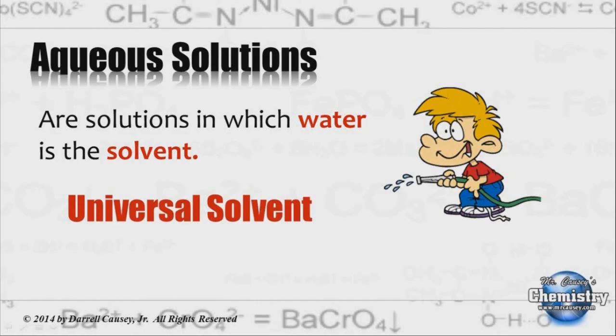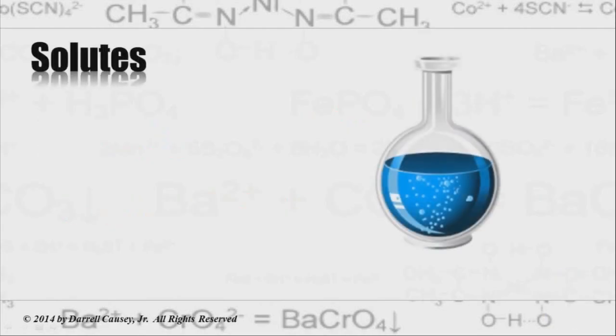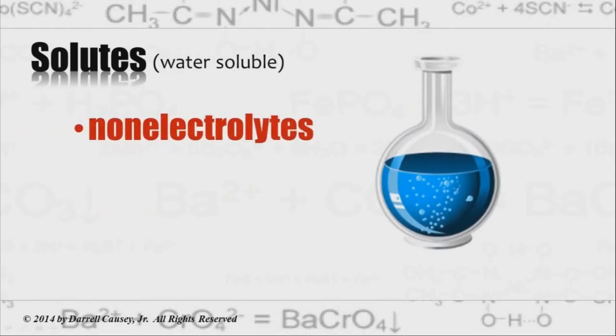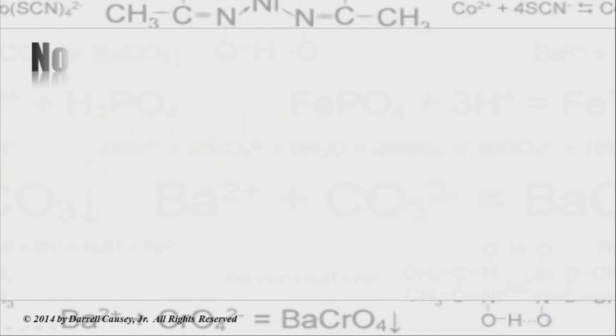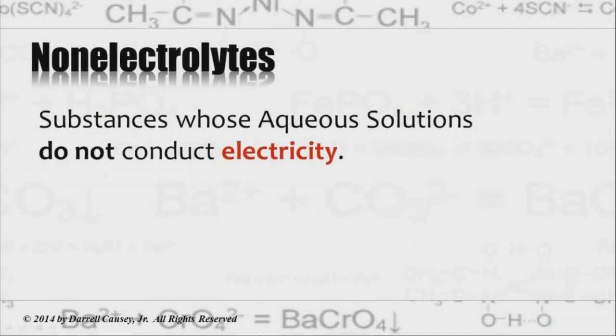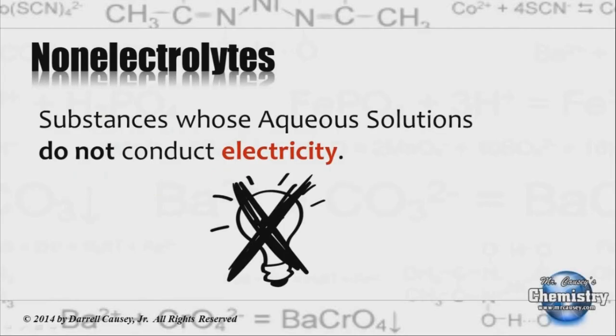Solutes that are soluble in water fall into two categories: non-electrolytes and electrolytes. Non-electrolytes are substances whose aqueous solutions do not conduct electricity, like sugar dissolved in water. You can dissolve sugar in water, that's an aqueous solution, but it does not conduct electricity, therefore it's a non-electrolyte.